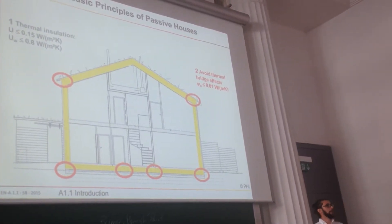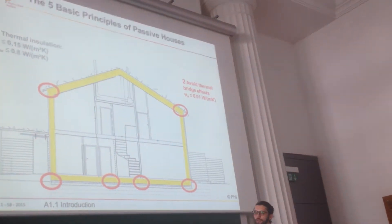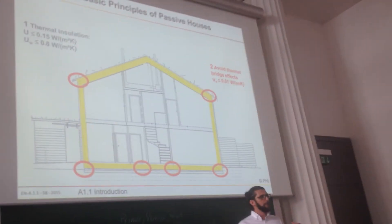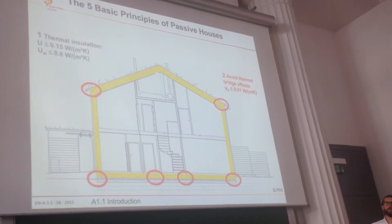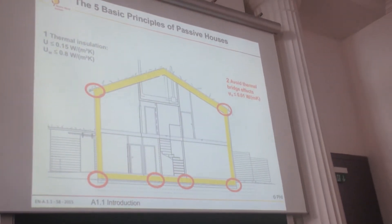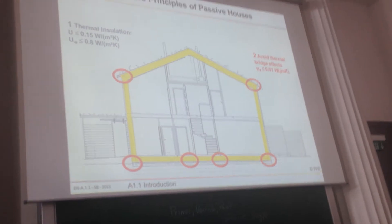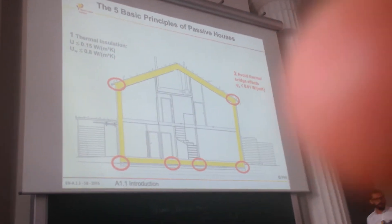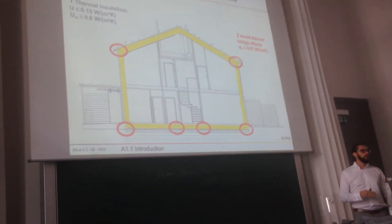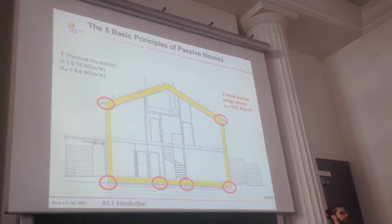Heat bridges — we can calculate heat bridges. I'll show some examples later on. But they are always the same. Every building has corners, every building has connections to the ground. You have to mark them and look at the details — is it possible to optimize this? Make a fast two-dimensional calculation, calculate the psi value. This is for heat bridges. And if it's below 0.01 W/mK, then it's fine.